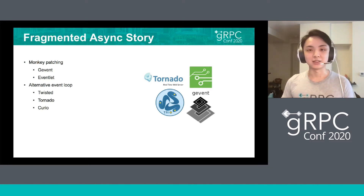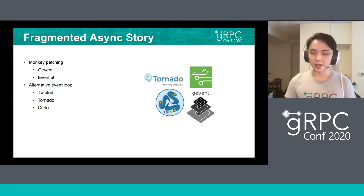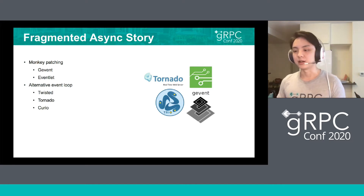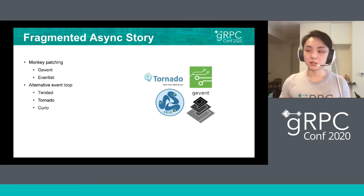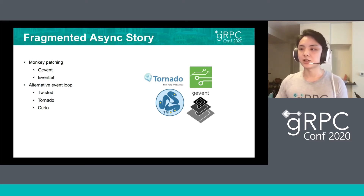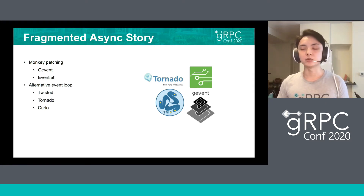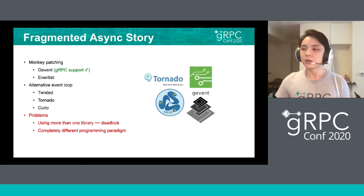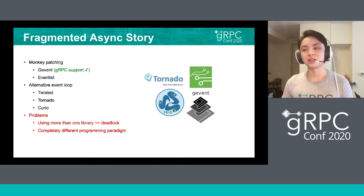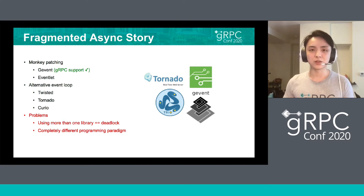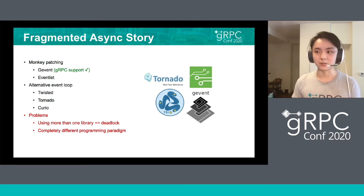This is because Python's fragmented asynchronous story. As you may know, Python has many different asynchronous libraries, for example, like gEvent, Twisted, Tornado, and they can split into two different kinds. The first kind is they do monkey patching — they patch all the standard libraries of Python. The second one is providing an alternative event loop so you can register your own code into it. But the problem is if you are using more than one asynchronous library, it may very likely cause a deadlock. And each one of them have many different programming paradigms, so it's very hard to switch from one to the other.